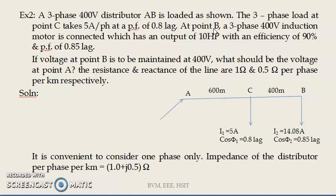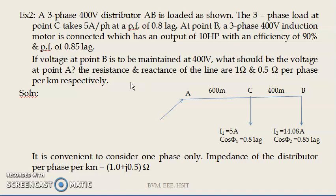At point B, a three phase 400 volt induction motor is connected which has an output of 10 HP with an efficiency of 90% and power factor of 0.85 lagging. If the voltage at point B is to be maintained at 400 volts, what should be the voltage at point A? The resistance and reactance of the line are 1 ohm and 0.5 ohm per phase per kilometer respectively.